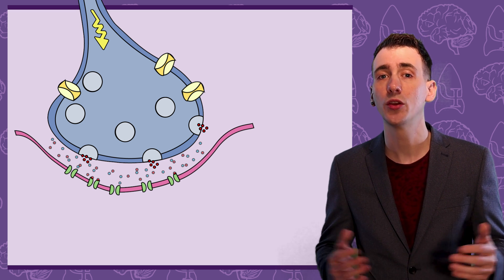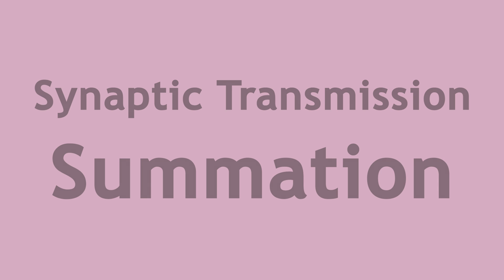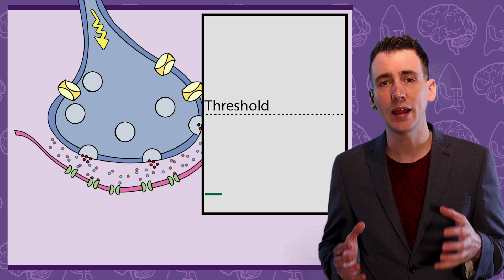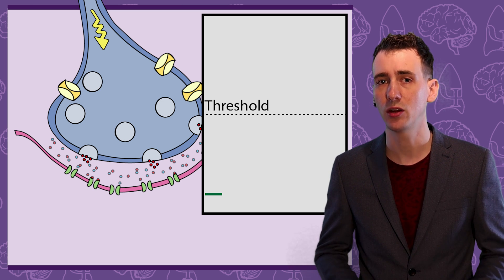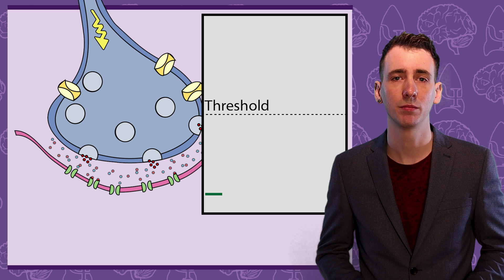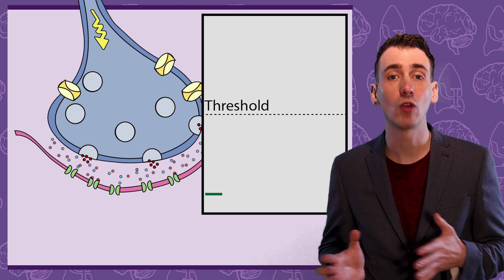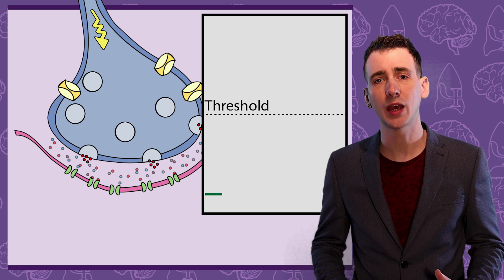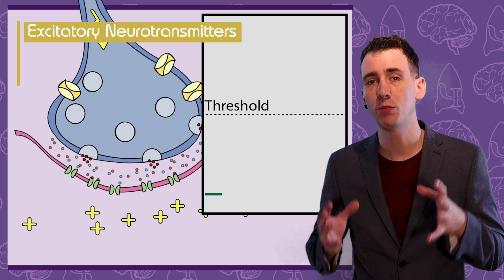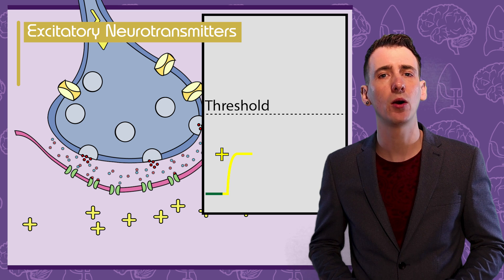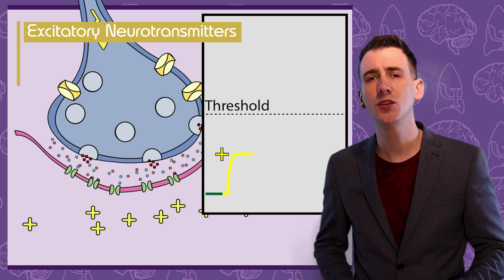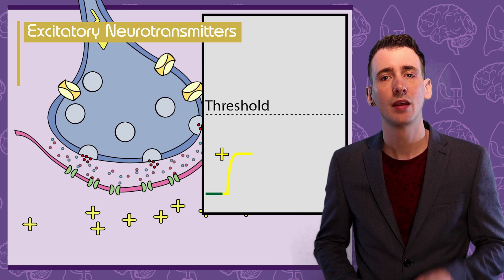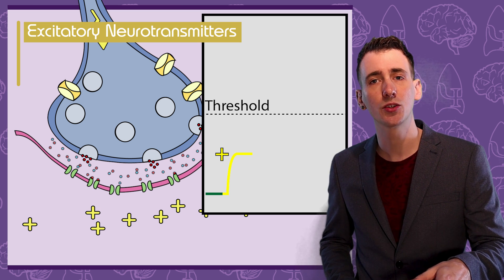Now a process called summation happens. For a new electrical action potential to form in the postsynaptic cell, the electrical charge needs to pass a threshold. This is where the neurotransmitters come in. In the synaptic cleft, there are a range of neurotransmitters. Some neurotransmitters are excitatory. When they're detected by the receptors, they make the electrical charge more positive in the cell, a process called depolarization. This happens because the receptors allow positively charged sodium ions into the cell. This makes the formation of a new action potential more likely.